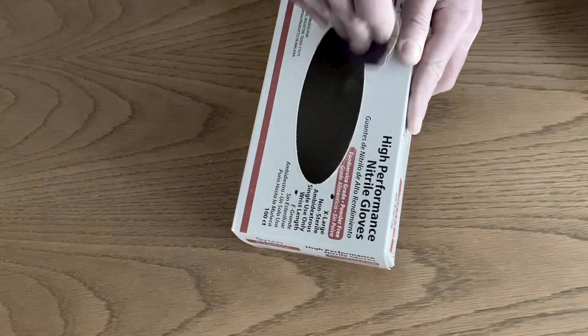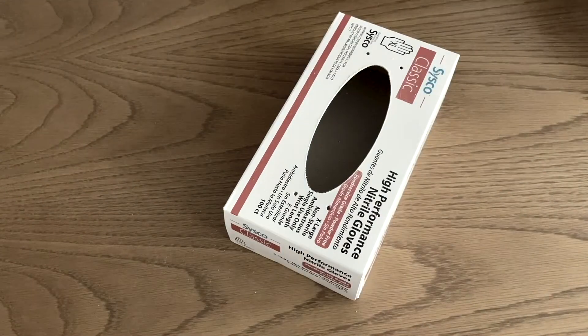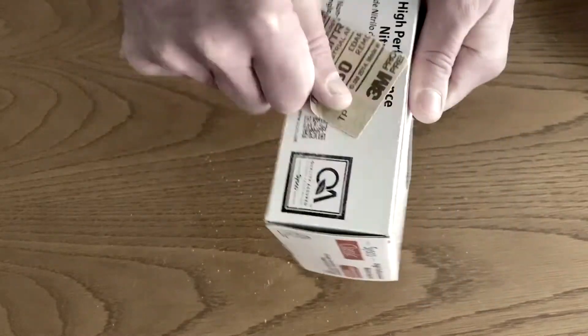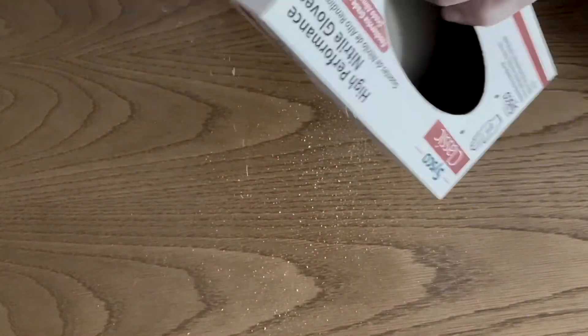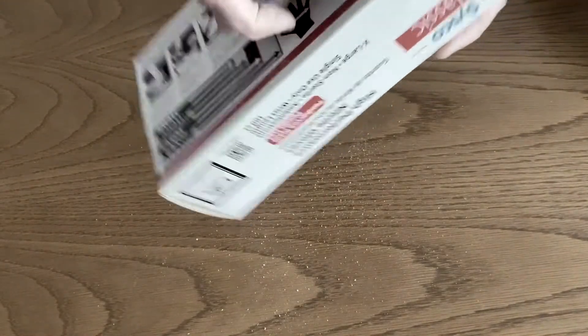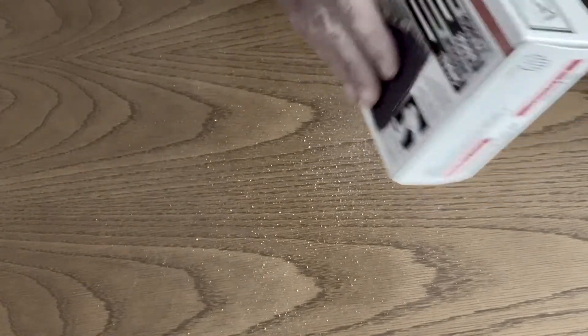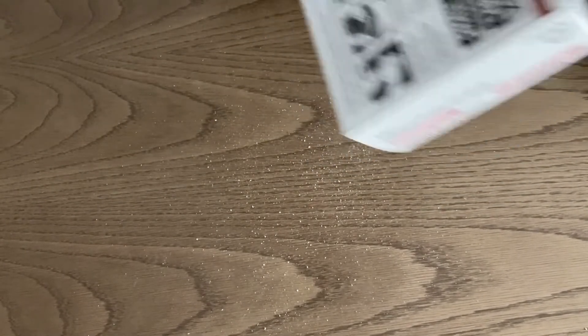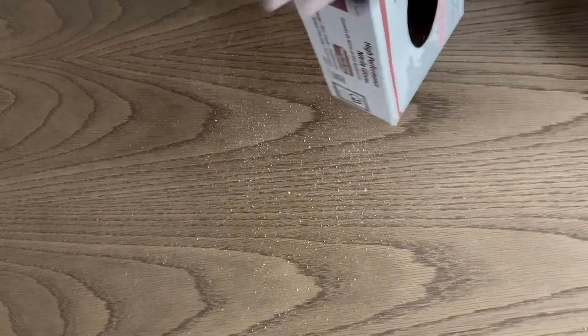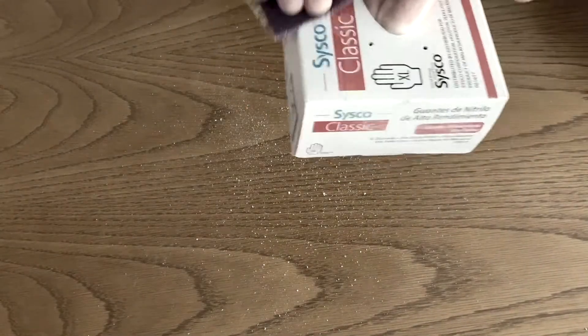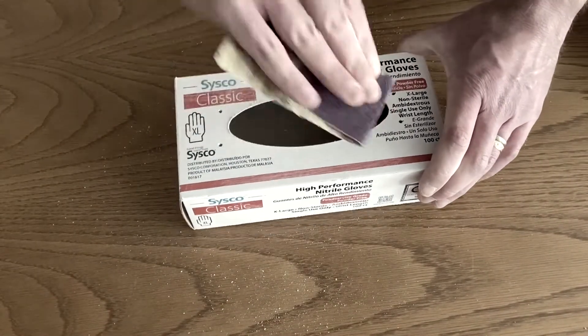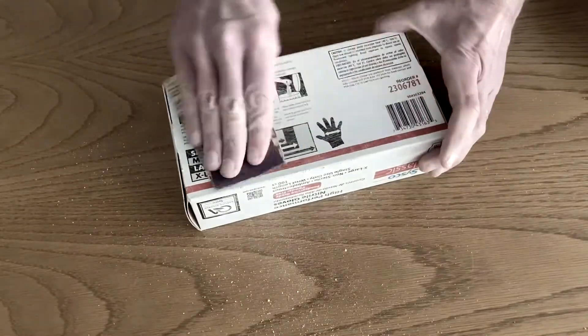After that, you want to take your sandpaper and rub it along the outside of the entire box. The reason for this is you want to have a surface where the paint will stick. And it will stick better to a rough surface. This will also make your box appear more like wood. And just keep going until you've done every single side. You'll notice that the writing and the decals are starting to come off. That's what you want.